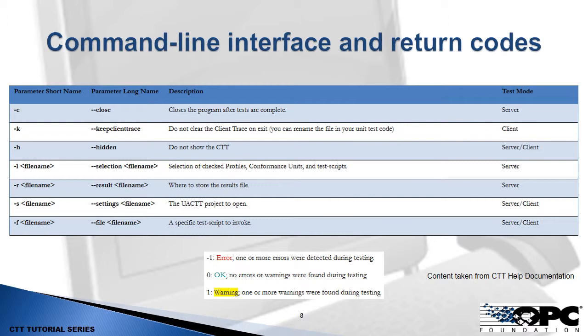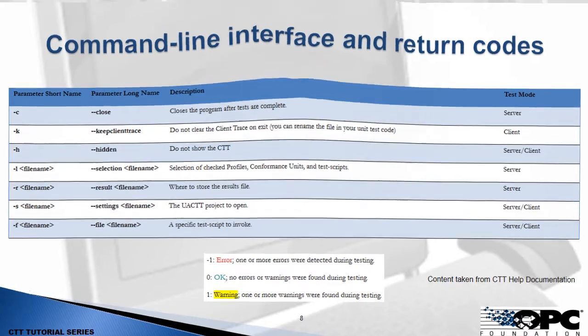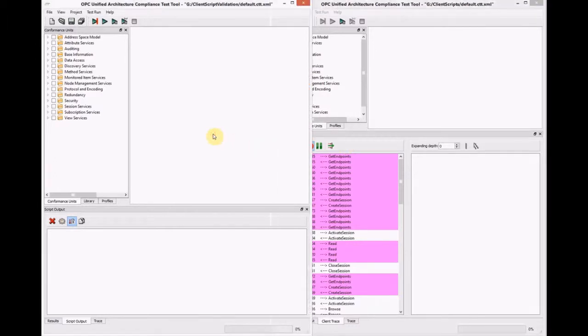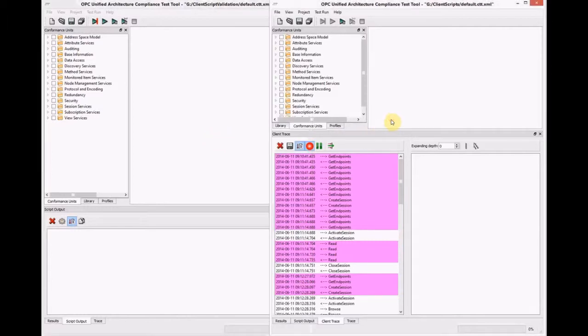The command line interface is shown on screen. There are a lot of options that enable you to fine-tune the CTT behavior, and the return codes are shown at the bottom. This information came from the CTT help documentation, which is provided with the CTT. Now let's take a look at a demo of how we actually use the CTT in our case study to test client scripts.